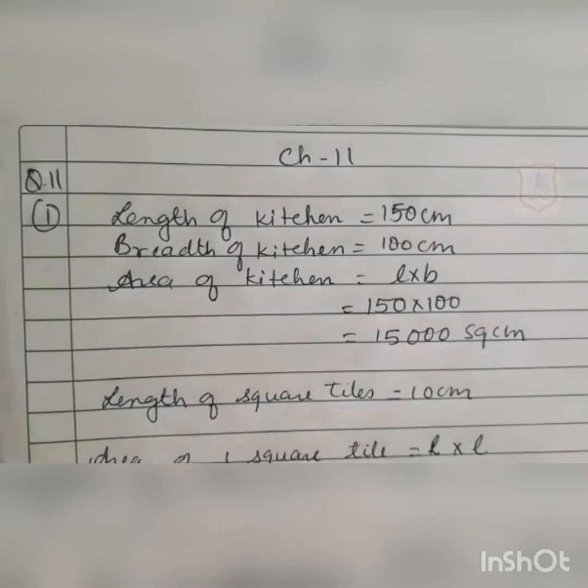Question number 4: If the perimeter of a square carom board is 200 cm, then what is the area of that carom board? It is given that the perimeter of the square carom board is 200 cm. First, we will use the perimeter formula. Perimeter of square carom board is 200 cm, as given in the question.